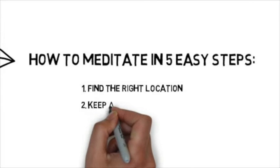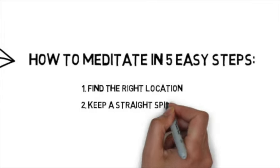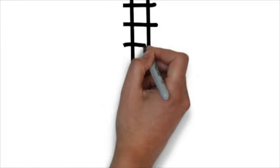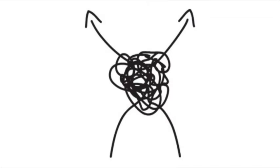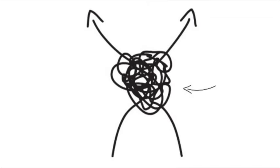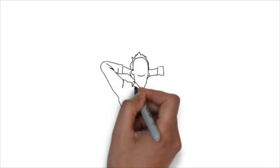Step number two: keep a straight spine. The straight spine is the best posture for effective meditation. Now this doesn't mean that you need to twist your legs into a pretzel. No, it is important to be comfortable so that you're not distracted during your meditation.